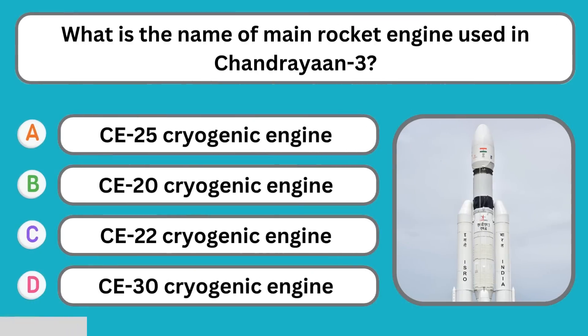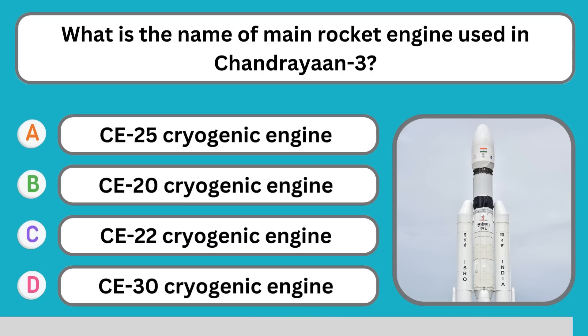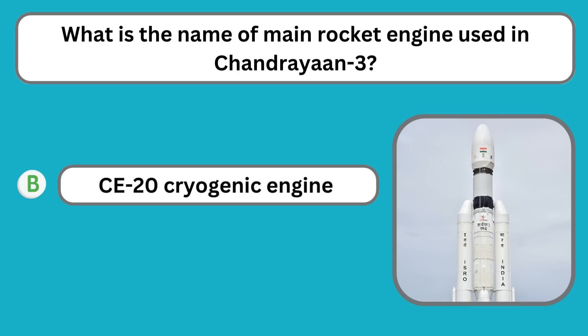What is the name of the main rocket engine used in Chandrayaan 3? C20 Cryogenic engine.